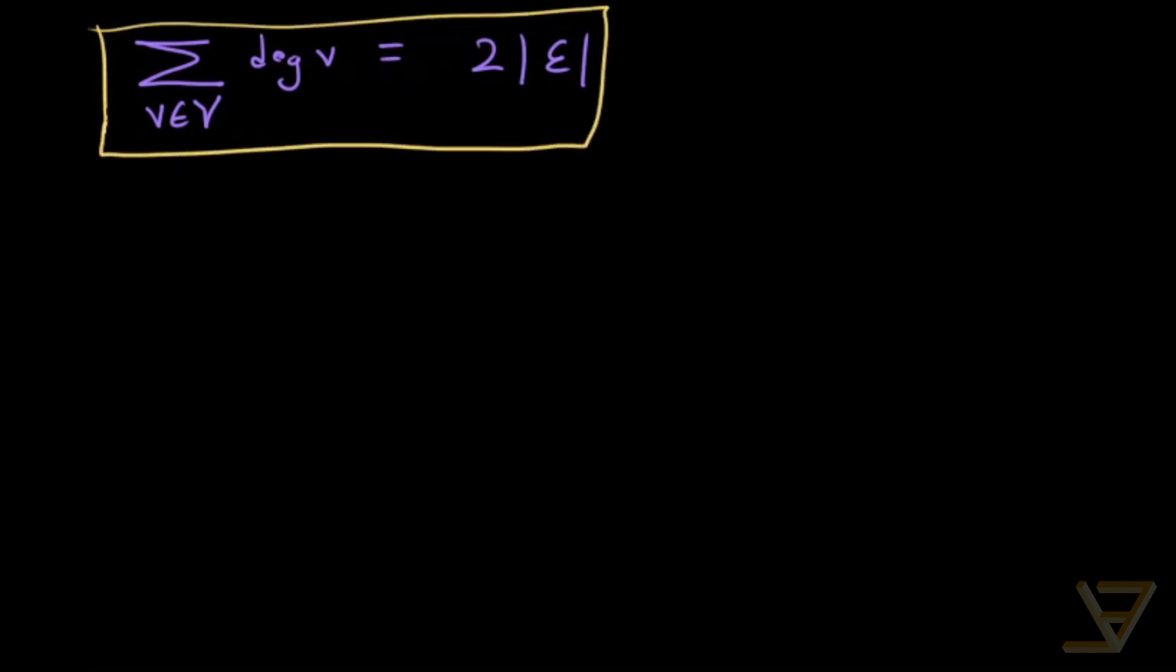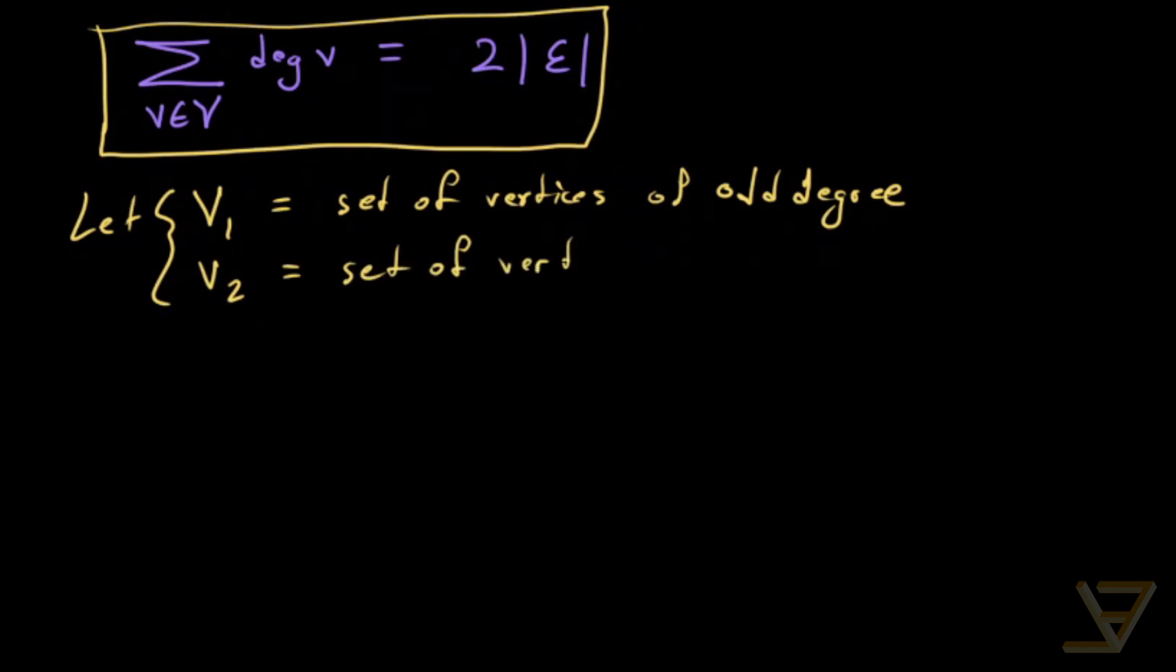But we can go further to find a very interesting result. So what we'll do is let V₁ be equal to the set of vertices of odd degree and V₂ equals the set of vertices of even degree.